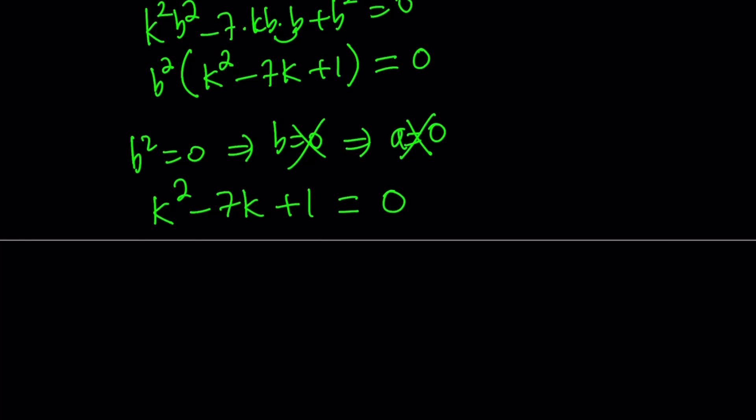So this is a quadratic equation, fairly easy to solve. And remember, k equals a/b. And that's what we're looking for. So we're looking for the k values. And by using the quadratic formula: negative b plus minus the square root of b^2 - 4ac, which is 49 minus 4, which is 45. And that is divided by 2.